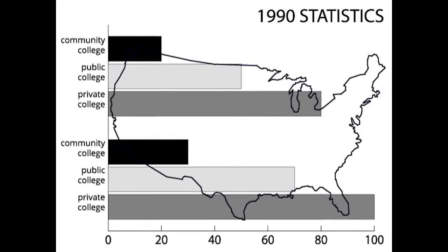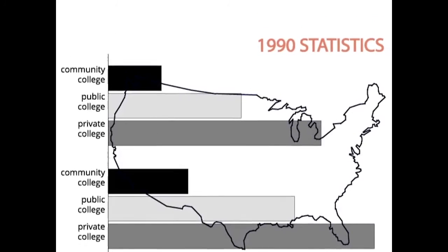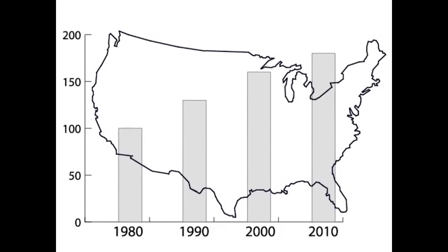If I needed current statistics on the average cost of college in the United States, a source published in the 1990s would be out of date. However, if I was looking at the increase in college tuition over the last few decades, a source from the 1990s might fit my purposes.